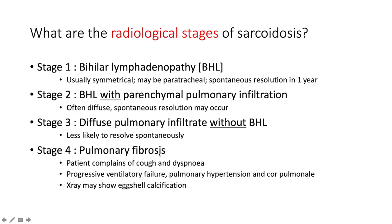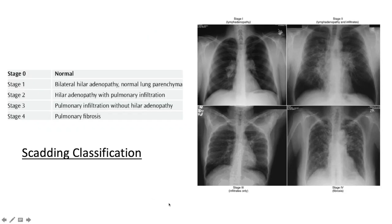Stage 4 is pulmonary fibrosis — the patient develops cough and dyspnea with progressive ventilatory failure, raised pulmonary pressures, pulmonary hypertension, and cor pulmonale. X-ray may show extra calcification.